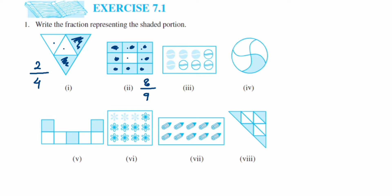For the next one, count how many balls are given: one, two, three, four, five, six, seven, eight — so eight goes in the denominator. Out of that, how many are colored or shaded? One, two, three, four — so it's four out of eight. The fraction becomes four upon eight.